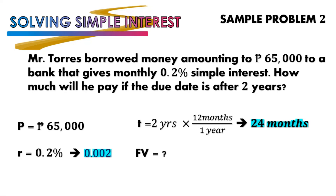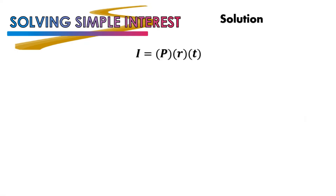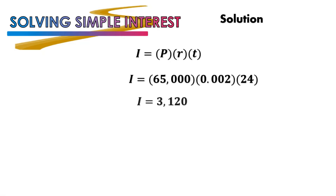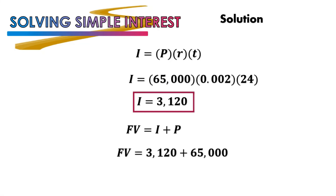We are looking for FV — the total amount Mr. Torres will pay after 2 years. Find I first using I = PRT: I = 65000 × 0.002 × 24 = 3,120. Then compute FV = I + P = 3,120 + 65,000 = 68,120. Therefore, Mr. Torres will pay P68,120 after 2 years.